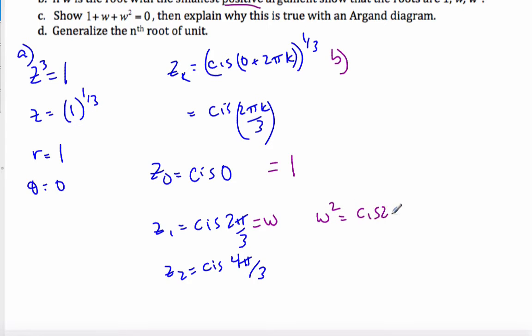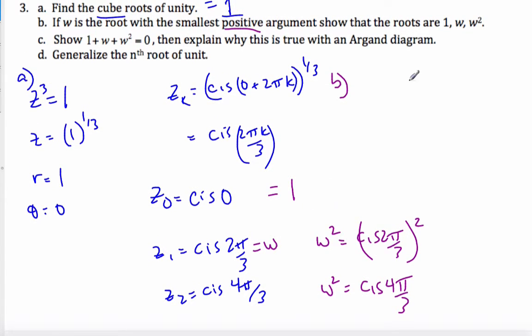that's going to be cis 2π by 3 squared. Using De Moivre's Theorem, I get cis 4π by 3 is w squared. And so these are the roots of 1, the cube roots of 1.